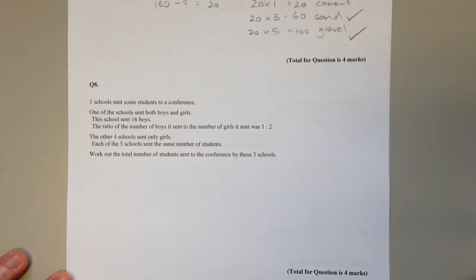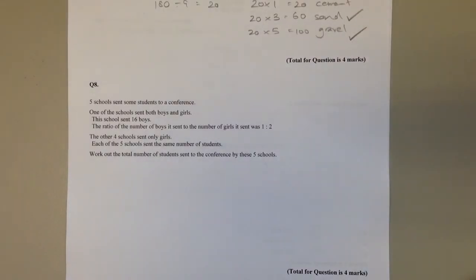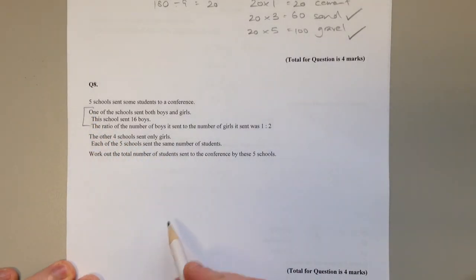And finally question 8. Five schools send some students to a conference. One school sends 16 boys and the ratio of boys to girls is 1 to 2. The other 4 schools sent only girls, and each of the 5 schools sent the same number of students. Work out the total number of students. There's a lot of information to process here. Let's start with the first school.